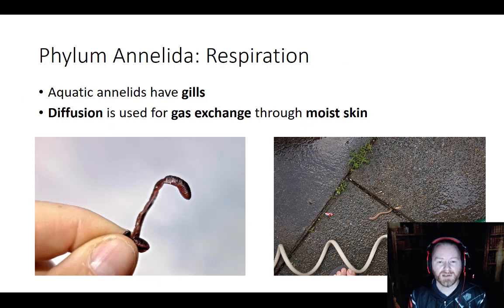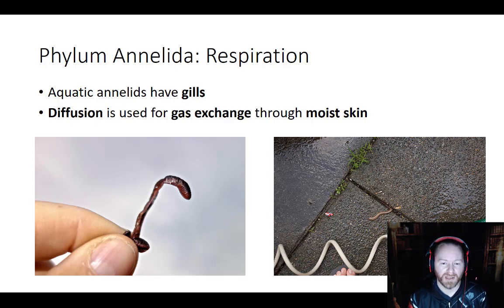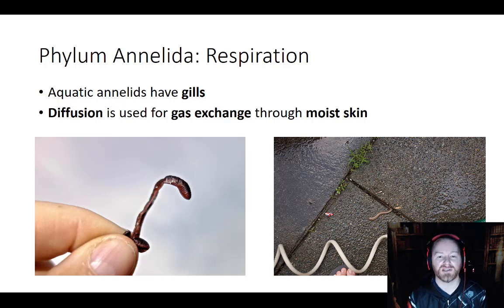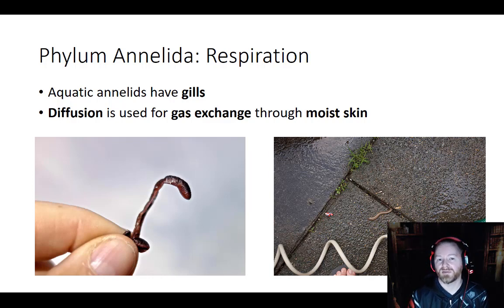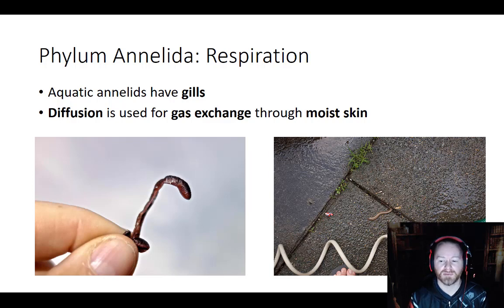Moving on to respiration: annelids do have to respire but they don't have a respiratory system. Some aquatic annelids have gills — basically an extension of their circulatory system out into the water that helps them do gas exchange more efficiently. But for species on land, lungs haven't evolved yet at this point. They respire through their skin by simple diffusion, and in order to do that the skin has to stay moist — not soaking in water, not dried out, but just damp.